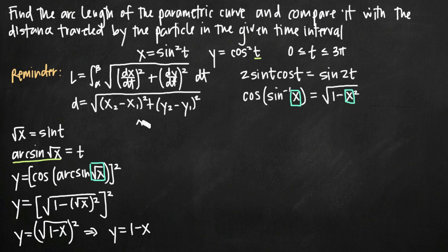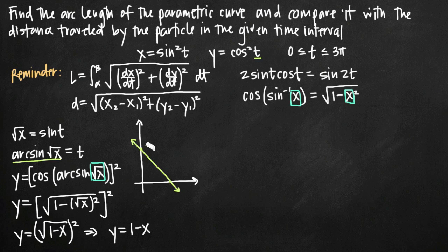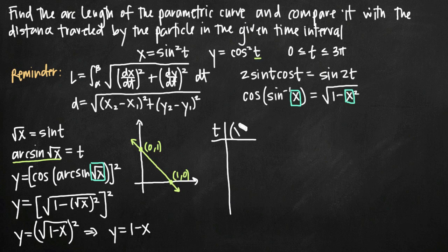Now we have an equation that's easy to work with. Graphing y equals 1 minus x on an xy coordinate plane, we get a line with intercepts at the point (0, 1) and the point (1, 0). Now we're interested in the interval where t is from zero to three pi. We'll make a chart of t values and corresponding coordinate points (x, y), listing t equals 0, pi over 2, pi, 3 pi over 2, 2 pi, and continuing down to 3 pi.